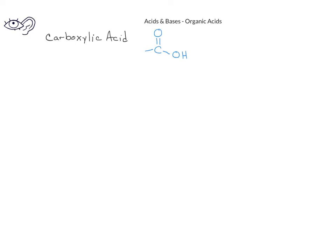Carboxylic acids comprise a class of compounds that have a structure containing a carbon double bonded to an oxygen, and then that same carbon is attached to an oxygen, which is then attached to a hydrogen. As we continue in organic chemistry, we'll quickly learn to recognize arrangements of atoms that comprise what are called functional groups.